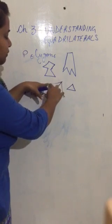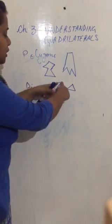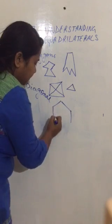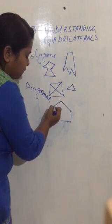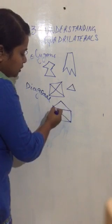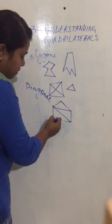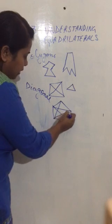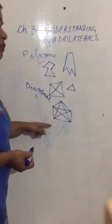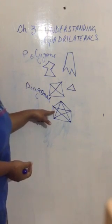From a vertex, the adjacent vertices cannot be joined by a diagonal, but I can join the opposite vertex. If I take a pentagon — from here, I can join this vertex and this vertex, but not the adjacent ones. So the non-adjacent vertices, when joined with a line segment, form diagonals. When we join the non-adjacent vertices of a polygon, those line segments are called diagonals.